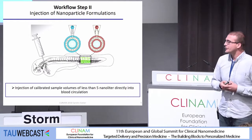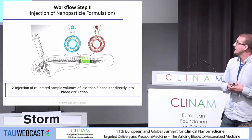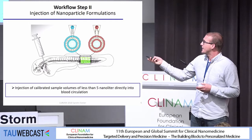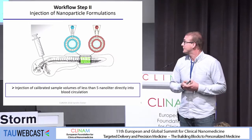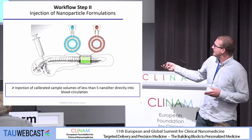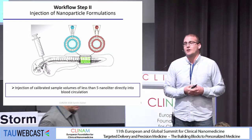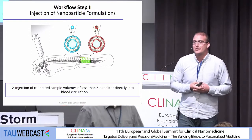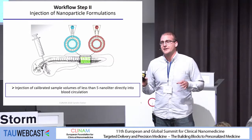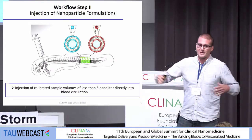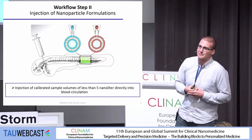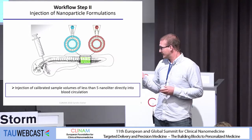We usually inject fluorescently labeled nanoparticle formulations directly into the blood circulation of two-day-old zebrafish embryos. As you can see here, the required injection volume can be calibrated and is between one to five nanoliters. So if you have very expensive samples and need to screen many different samples, this is a very easy and cheap approach for a first assessment.